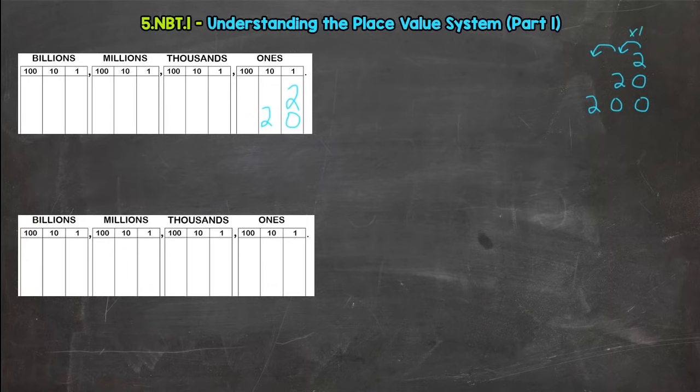Every time we push a number to the left one spot, our value increases by 10. So think about it: if we have a 2 that's worth 2, and then a 2 that's worth 20, that 2 here is 10 times the value of this 2. If we move it again, our value increases by 10. Every jump to the left, the value of that digit will increase by 10.